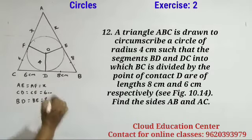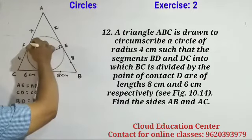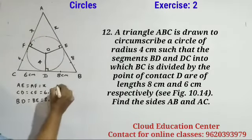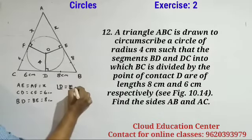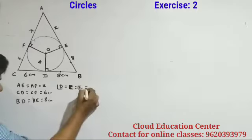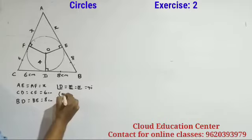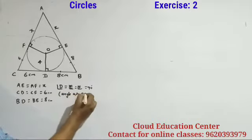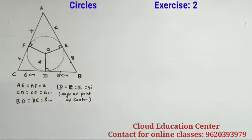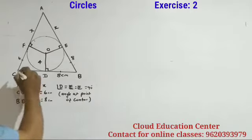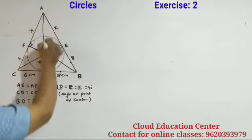We don't know the length of AF and AE, so I will take it as X. AE equals AF equals X because the tangents drawn from an external point are equal. The angle at the point of contact is 90 degrees. Now I am joining the lines OB, OC, and OE.